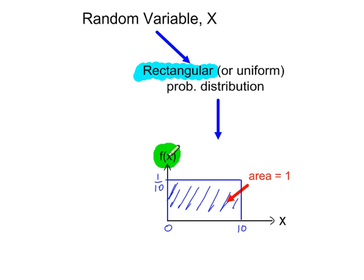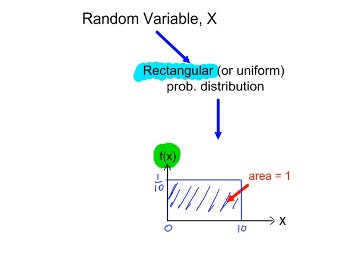So f of x, our probability density function, is equal to 1 tenth when x is between 0 and 10. Outside that range, the probability density function is 0. So it's 1 tenth along here, and as soon as you go outside the range 0 to 10, f of x is 0 — it's 0 on this side and 0 on this side.